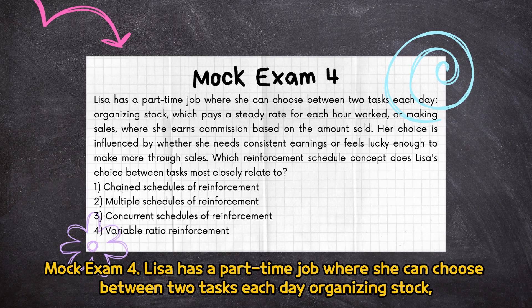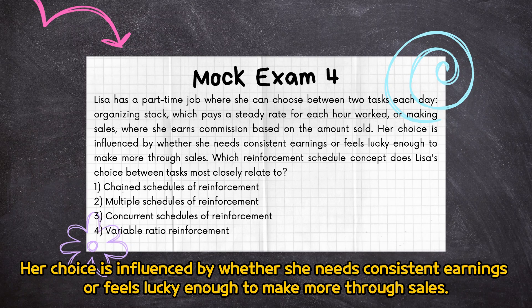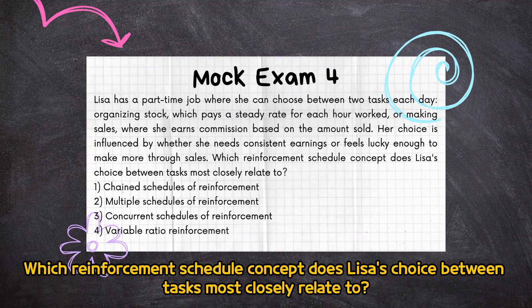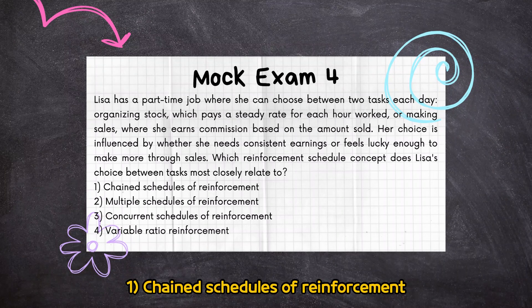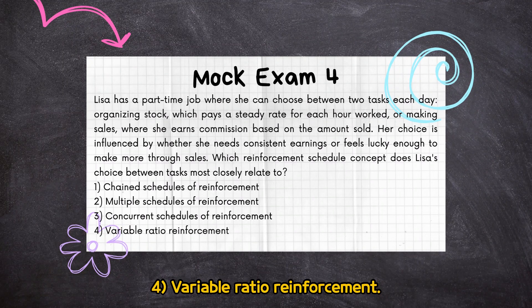Mock Exam 4: Lisa has a part-time job where she can choose between two tasks each day — organizing stock, which pays a steady rate for each hour worked, or making sales, where she earns commission based on the amount sold. Her choice is influenced by whether she needs consistent earnings or feels she can make more through sales. Which reinforcement schedule concept does Lisa's choice between tasks most closely relate to? (1) Chain schedules of reinforcement, (2) Multiple schedules of reinforcement, (3) Concurrent schedules of reinforcement, (4) Variable ratio reinforcement.